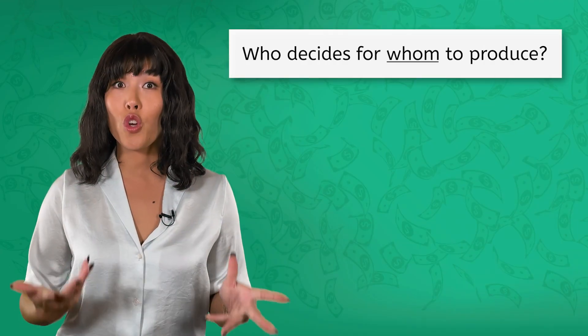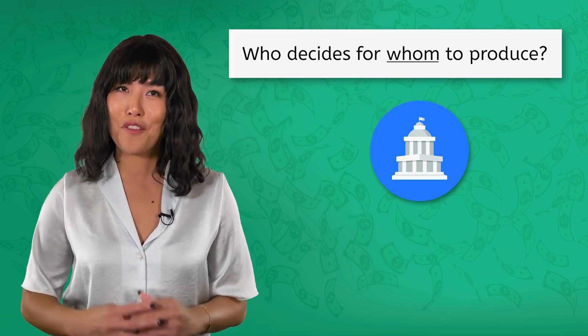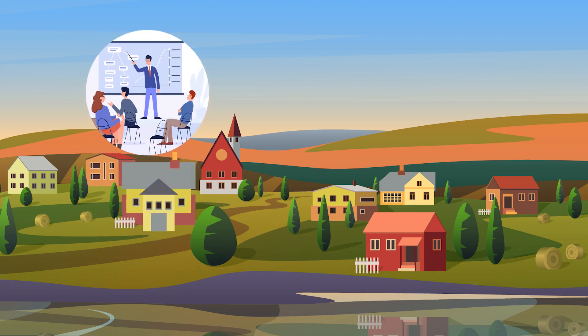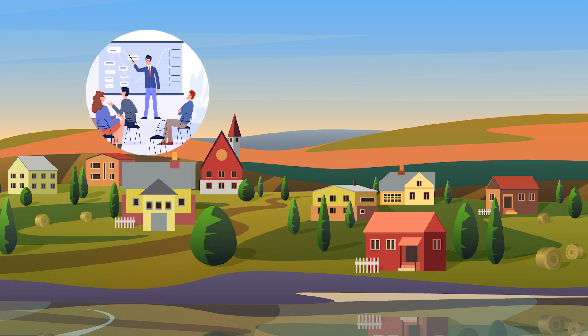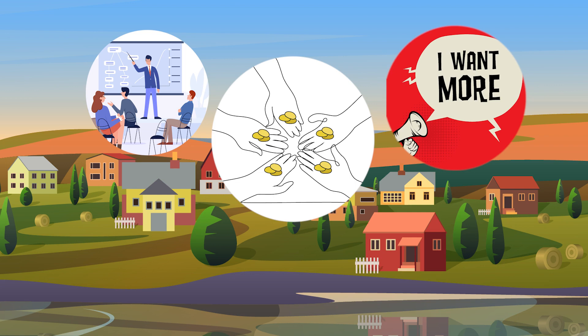Who decides for whom to produce? The government again. In Communaville, there's no need for advertising or competition. Instead, the leaders, with input from the villagers, distribute the goods based on needs. This ensures everyone has a fair share. The advantage? No one feels left out or lacks essential items. The potential downside? If someone desires more than their share or has specific preferences, they might feel their desires aren't fully met.